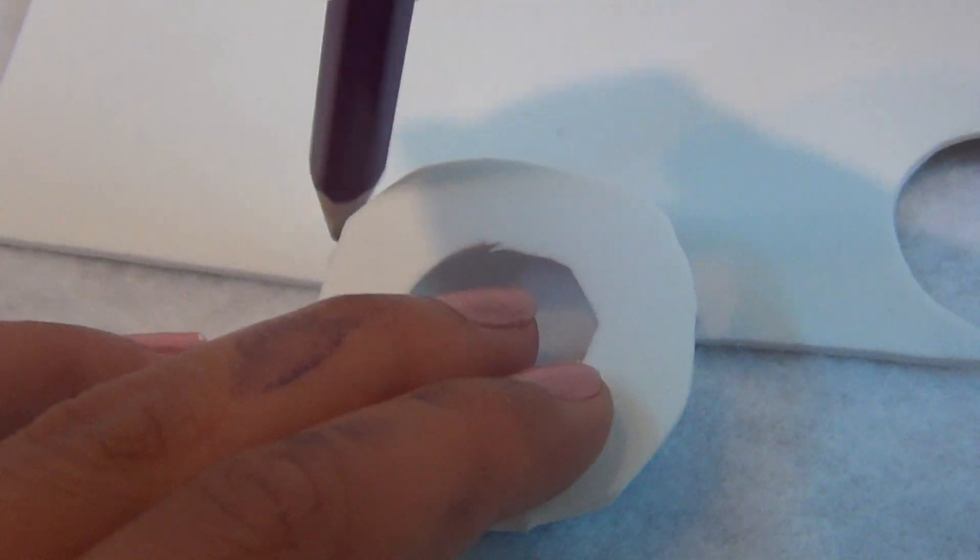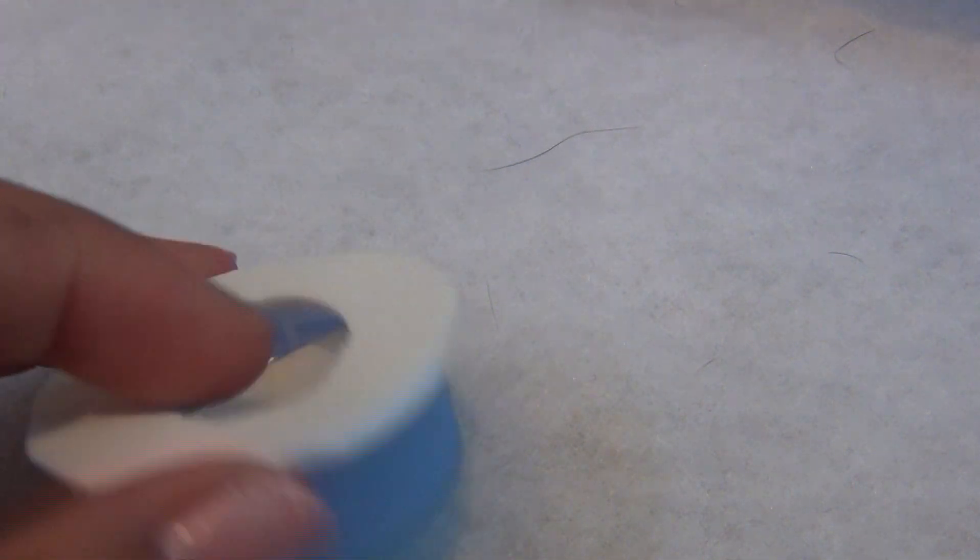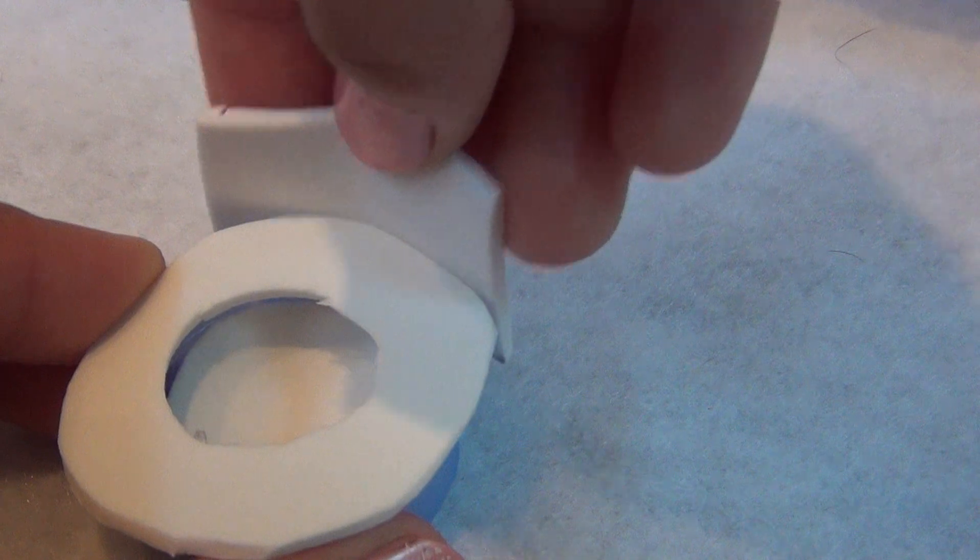Make your toilet back the width of your bottle cap. So about there. Cut it out.